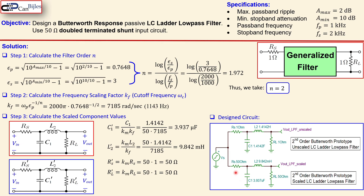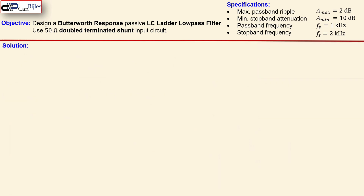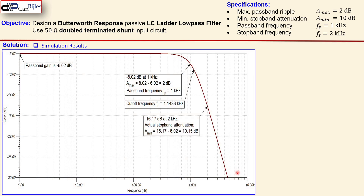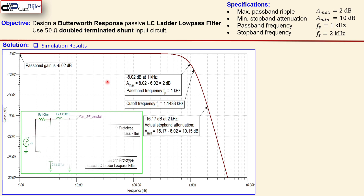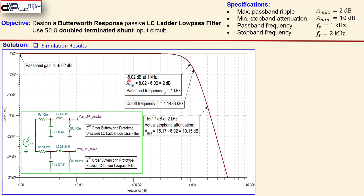Looking at the simulation results from the Bode plot: the passband gain is −6.02 dB, which is 0.5 (one-half). This is expected because the source Rs = 50 ohms and load RL = 50 ohms form a voltage divider, giving 50/100 = 1/2. At 1 kHz the gain is −8.02 dB, which is 2 dB down from the passband gain — exactly matching our A_max specification.